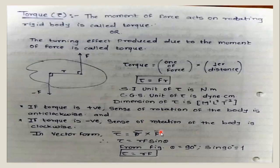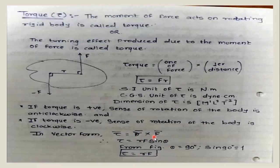According to the vector product, R cross F is nothing but R F sin theta. The general formula is A cross B equal to AB sin theta. So torque equals R F sin theta, where theta is the angle between R and F. Since R and F are perpendicular, theta is equal to 90 degrees, and sin 90 equals 1, so T is equal to R into F. Thus torque in vector form is equal to R cross F.